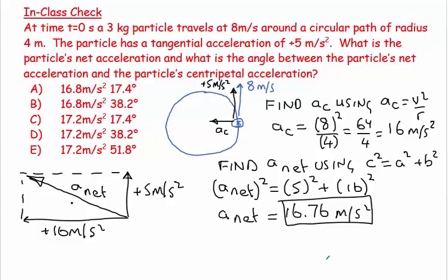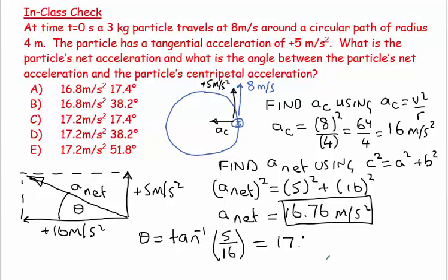Now I want to find the angle between the net acceleration and the centripetal acceleration. Theta equals the inverse tangent of the opposite over the adjacent, which is 5 over 16. Calculating that gives 17.35 degrees. That looks right — it's a small number over a large number, so I'd expect an angle less than 45 degrees. So the answers are 16.76 meters per second squared and 17.35 degrees.